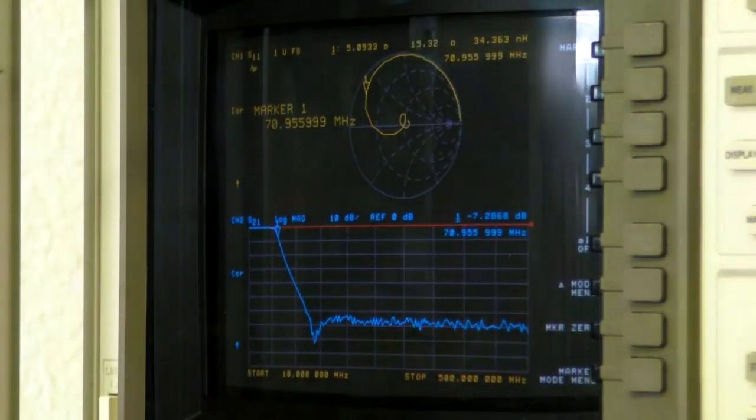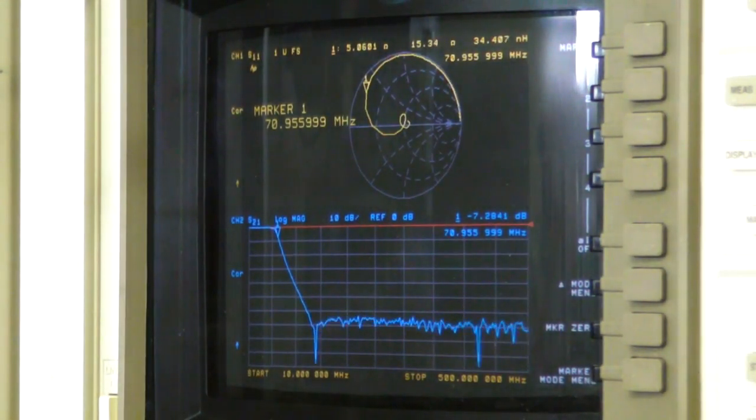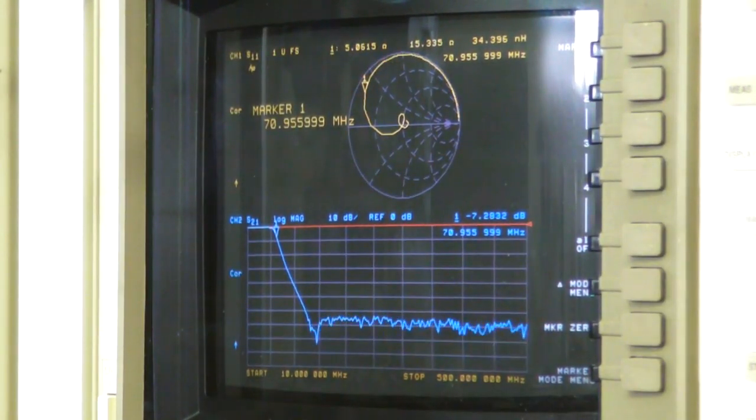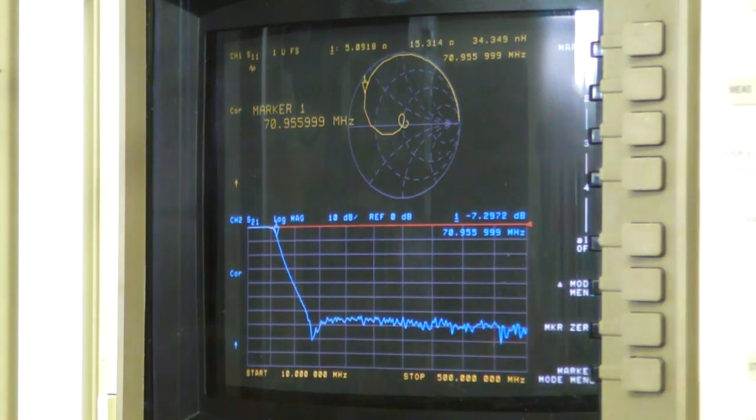But when you move out here to the knee of the filter where it's down 3 dB or so, it's 70 megahertz. And see, now it looks like a short. It's down to 5 ohms plus J15. So it looks like an inductor to ground. Well no, you do want that. It's a low-pass filter.